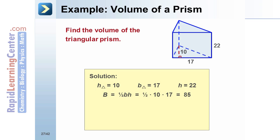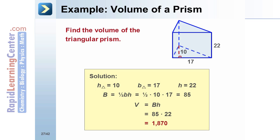Substitute the needed values into the formula for the area of a triangle. The area of the base equals one-half times 10 times 17, or 85. Substitute into the volume formula: V equals 85 times 22. The volume of the prism is 1,870.